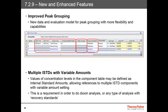A few final features to mention include improved peak grouping. Chromeleon 7.2.9 introduces a new data and evaluation model for peak grouping with more flexibility and capabilities. Also, multiple internal standards with variable amounts are now supported. The values of concentration levels in the component table may be defined as internal standard amounts, which allows references to multiple internal standard components, each with variable amounts. This is a requirement for dioxin analysis or any other type of analysis with recovery standards. Each of these are explained in detail in the release notes for Chromeleon 7.2.9.